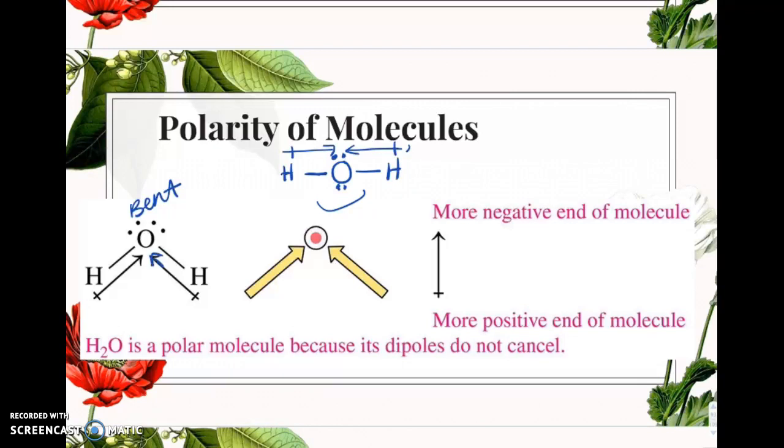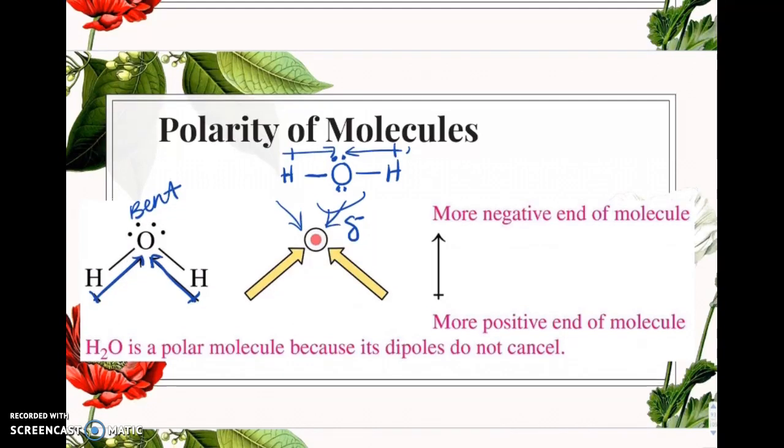So I'm actually drawing my dipoles like this. There's nothing canceling, there's nothing going this way and there's nothing coming this way. So it's not getting canceled out. You have a negative end to the part of the molecule and you've got positive ends to this molecule. If you have a negative end of the molecule and a positive end of the molecule, it's a polar molecule. It's uneven. It doesn't cancel out.